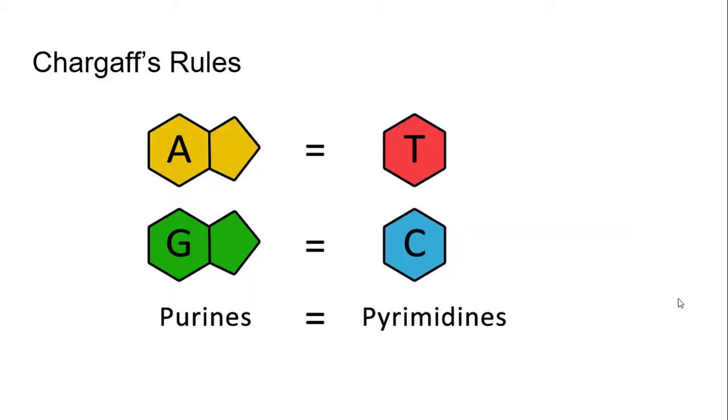They also worked using Chargaff's rules, where all the adenine, that's a nucleotide base, is going to be the same as thymine, and guanine is going to be the same as cytosine. They used that to figure out that they must be actually across from each other in the DNA structure. That's what led to them always being in the same amounts.